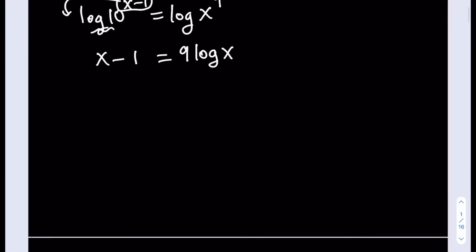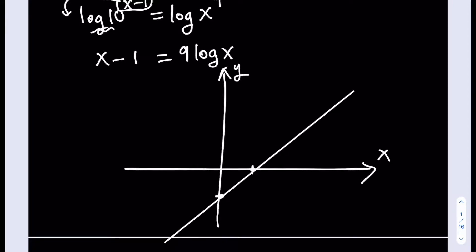So if you consider the graph of x minus 1, it's just going to be a straight line, right? So this is our x and y-axis. So x minus 1 is basically a function whose x intercept is 1 and the y intercept is negative 1. So it's going to go through these two points. So our straight line basically goes through these two points. That's the graph of y equals x minus 1.